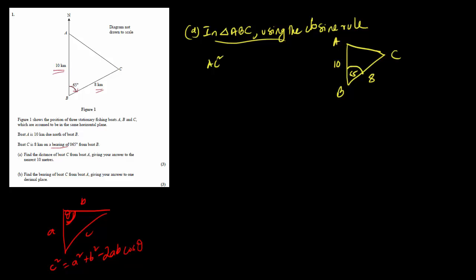So we can write: AC² = 10² + 8² − 2 × 10 × 8 × cos65°. These are the sides that make the included angle.